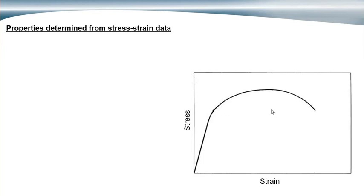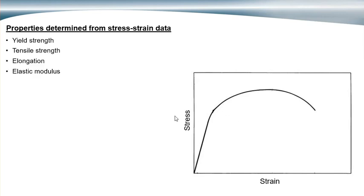There are a number of properties determined from the data obtained. The force data is used to calculate the stress, and the deformation data is used to calculate the strain. From that, we can plot stress versus strain and determine the material's yield strength, tensile strength, elongation, and elastic modulus.